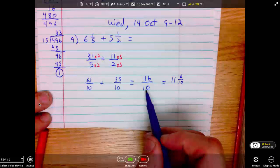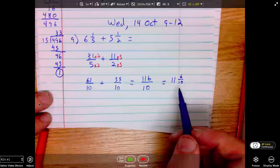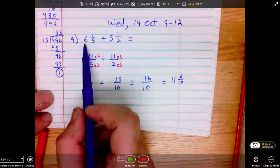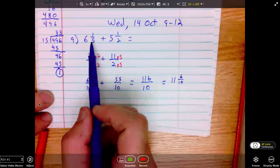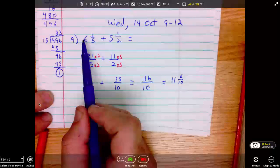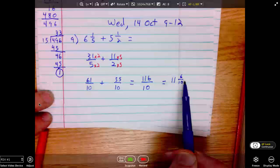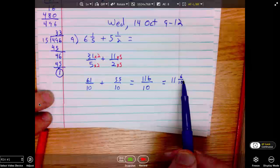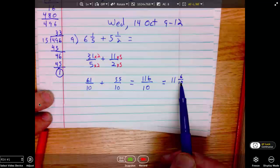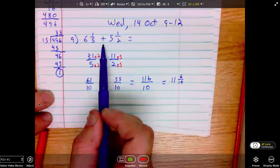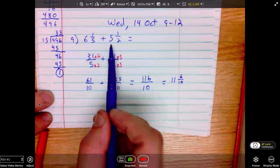116 divided by 10 is 11 and 6 tenths. Lastly, we checked for reasonableness. This is 6 and a little. This is 5 and a half. Well, 6 plus 5 is 11. 11 and some. This is definitely reasonable compared to 6 and 1 fifth plus 5 and 1 half.